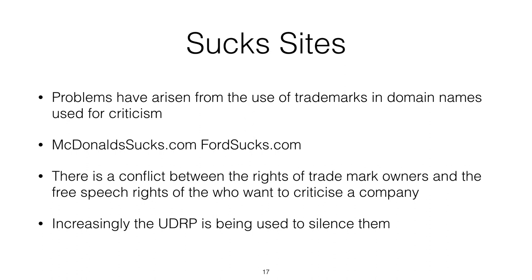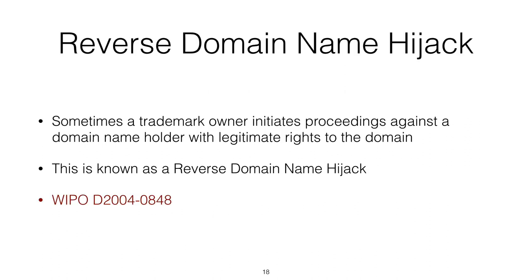We are finding that in more and more cases the UDRP is being used to shut down suck sites. Because the uniform dispute resolution procedure is so convenient, efficient, and much cheaper than going to court, sometimes a trademark owner initiates proceedings against a domain name holder with legitimate rights to the domain name — a trademark owner triggering the UDRP in the full knowledge that the person who has the domain name is perfectly entitled to have it. This is known as a reverse domain name hijack.